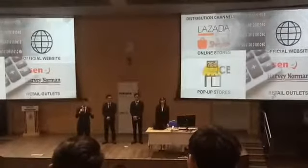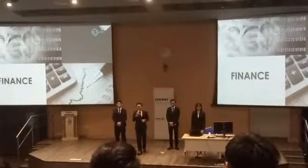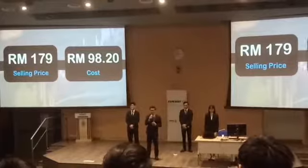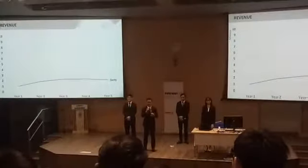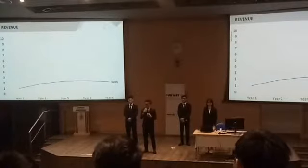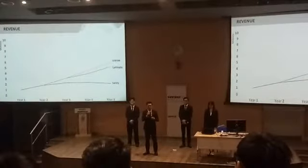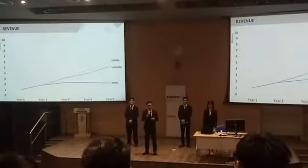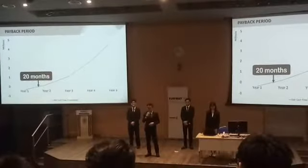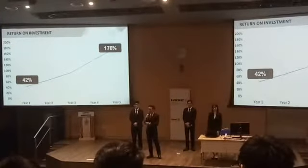Now surely, with such extensive marketing, we're going to be dealing with some astronomical figures. We will be selling Sanity at a price of RM179 and its cost is RM98.20, achieving a markup of 82%. In the first year, we expect sales to break RM1 million, growing until the fourth year but declining by the fifth year. We will be introducing a new product by the third year and licensing out our technology to other companies in the fourth year, so our revenue growth will remain strong. We expect to break even in the first year by selling 1,744 units, and we expect to pay back our investors in a mere 20 months. In the first year, our ROI will already be positive at 42%, averaging out to 101.6% over the next five years.